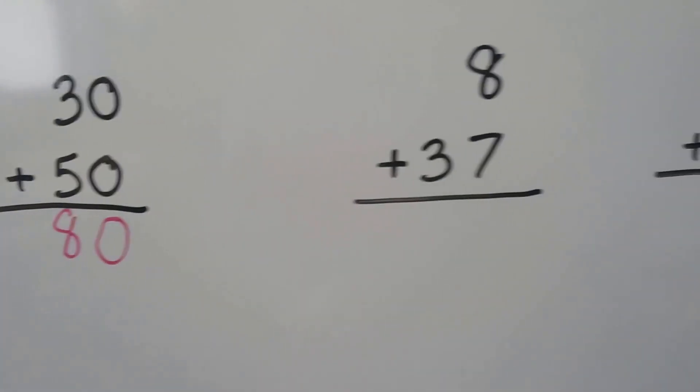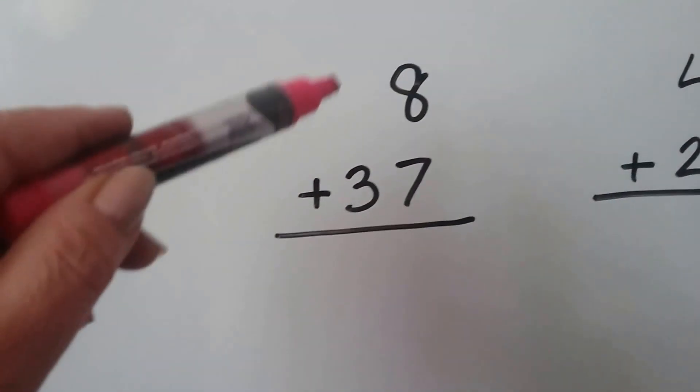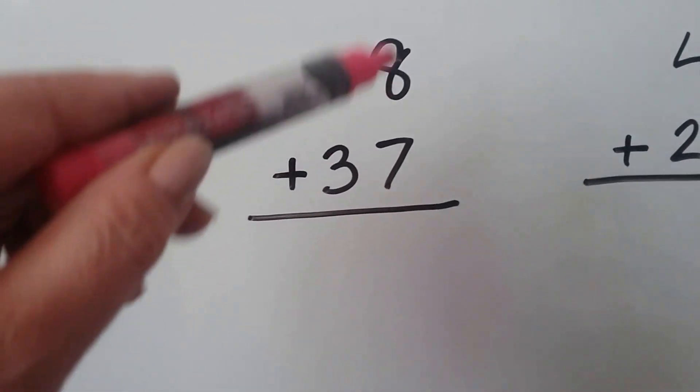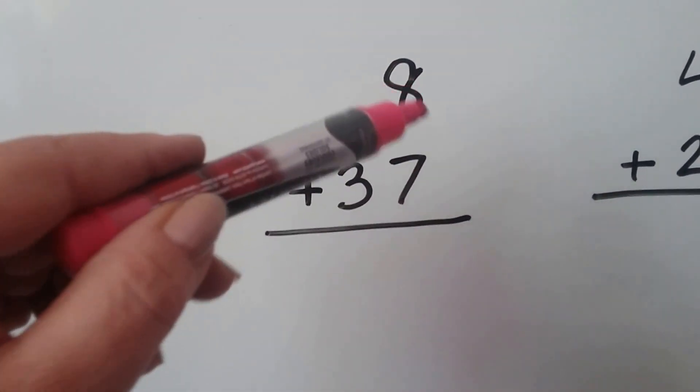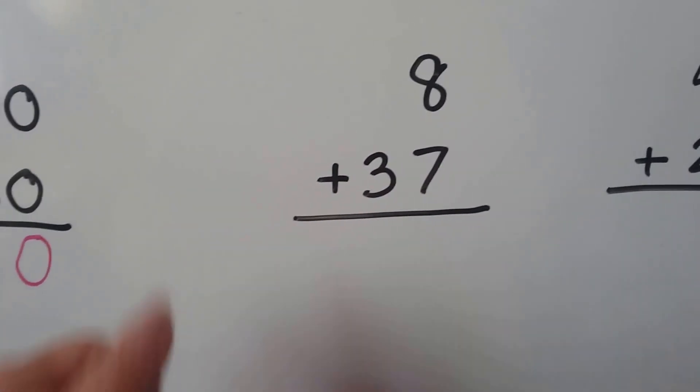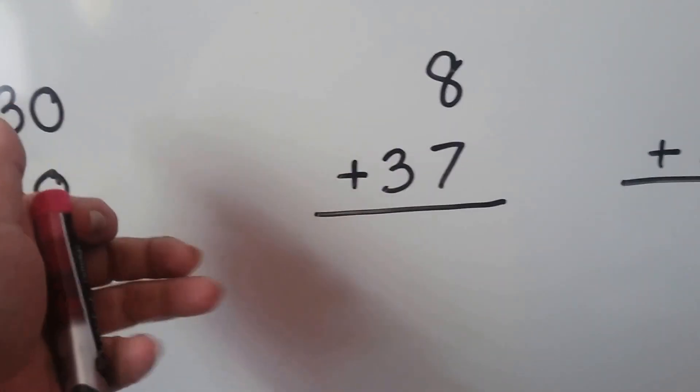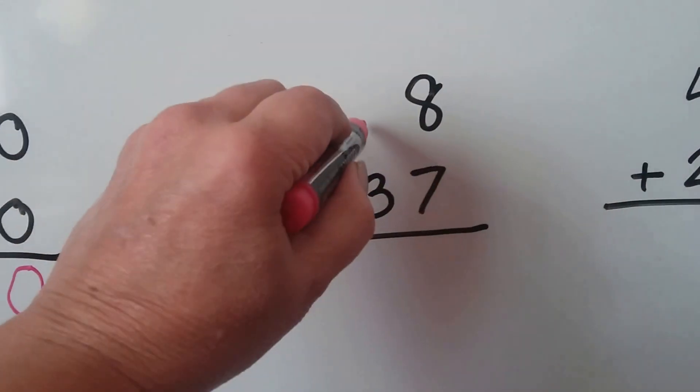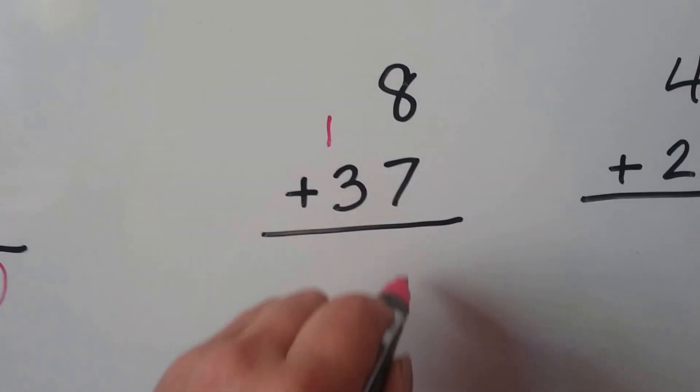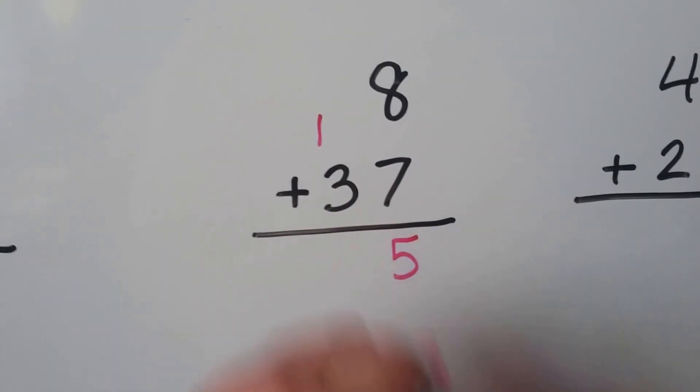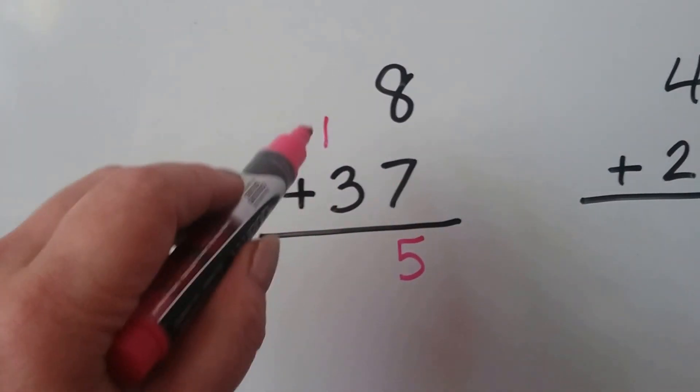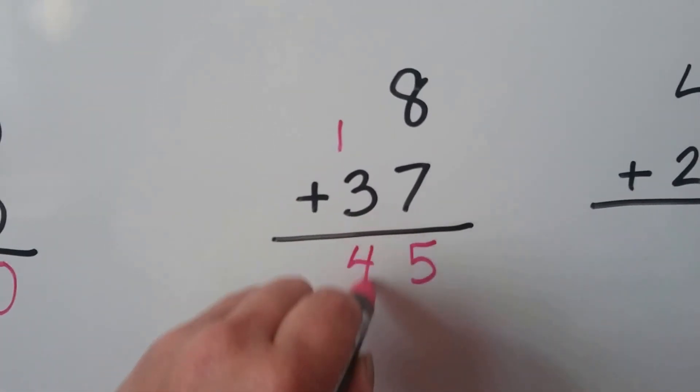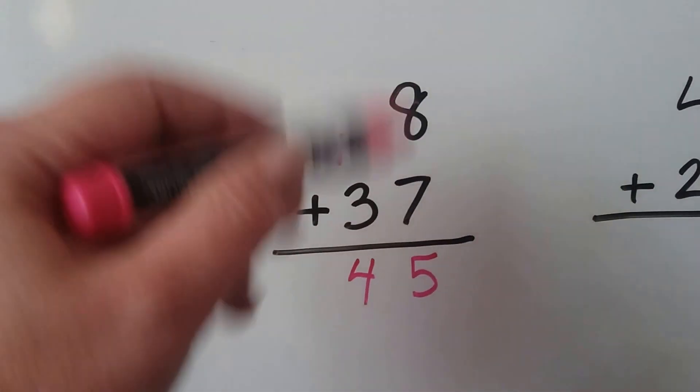Let's try this one. Look at how this one's written. There's nothing here for the tens place. Let's start with the ones: 8, and we'll count on 7: 8, 9, 10, 11, 12, 13, 14, 15. We can put the regrouped 1 there and the 5 here for the 15. We add the 3 and the 1, and that's a 4. 37 and 8 makes 45.